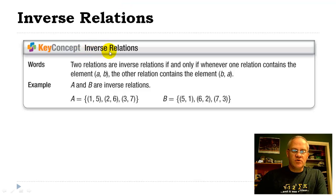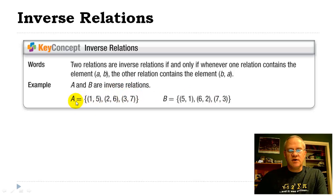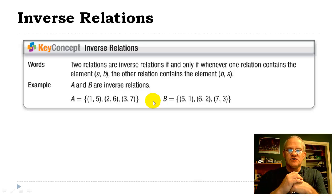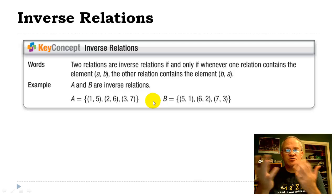Now remember, a relation is a set of ordered pairs. And so in this case, we've got A and B, and they're inverse relations. If you look closely, you'll notice the difference: in A, (1,5); in B, (5,1). In A, (2,6); in B, (6,2). In A, (3,7); in B, (7,3). The x's and the y's switched places — that's all that happened. So when we're talking about an inverse relation, we're just going to switch all the x's and the y's. That's considered an inverse.